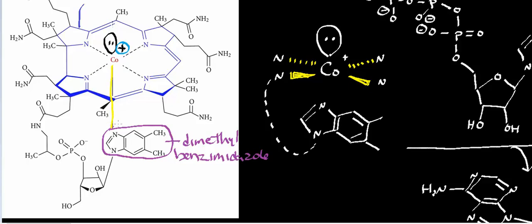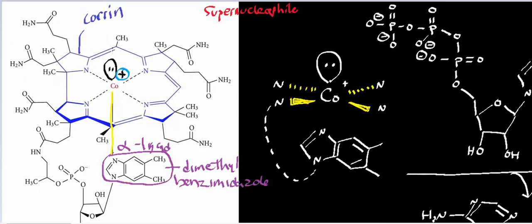The dimethylbenzimidazole is chelating the cobalt 1+ from the bottom. When you have a ligand that chelates the cobalt from the bottom, it's termed the alpha ligand. In all B12s we're concerned with, dimethylbenzimidazole is always the alpha ligand. Whatever is up here on top — in this case it's electrons, but it'll eventually be an adenosyl or deoxyadenosyl group — that group on top is called the beta ligand. That's just to orient you with terminology with respect to the corrin ring system.